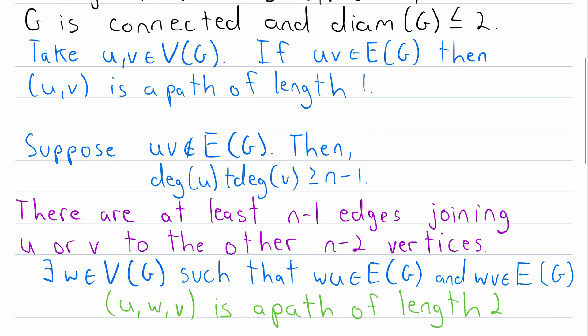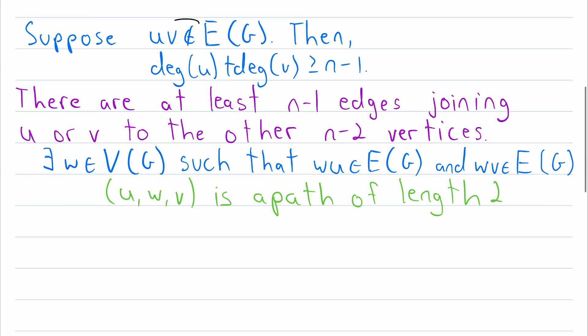Clearly, if two vertices are adjacent, then there is a path of length 1 that goes straight from one vertex to the other. Then, if two vertices are not adjacent, we know by our hypothesis that we assumed about G that the sum of their degrees has to be greater than or equal to n minus 1, where n is the number of vertices in G.